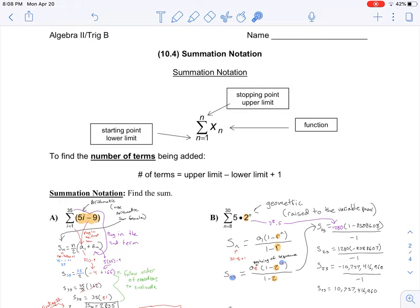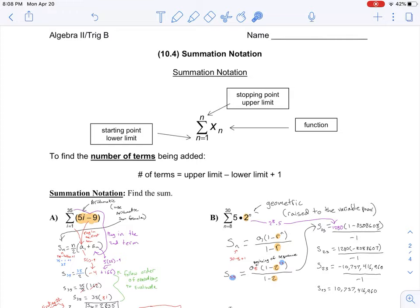To find the number of terms being added, we're going to look at the upper limit minus the lower limit plus 1, and that's going to come into play here, starting with example A, just working from the top down.